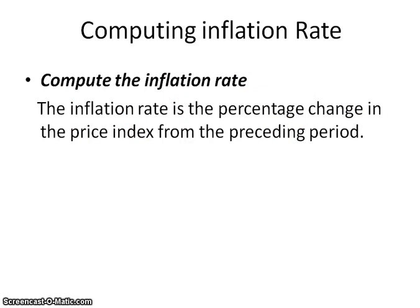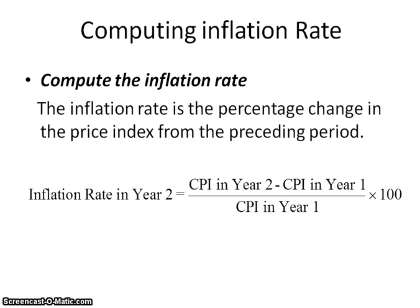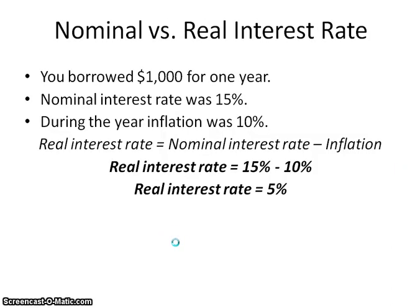When talking about the inflation rate, the inflation rate is not the CPI. The CPI is a price index — that 100-and-above number. The inflation rate is that percentage change from one year to the next: new minus original divided by original times 100. That will give you the inflation rate.